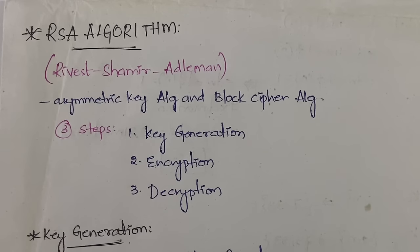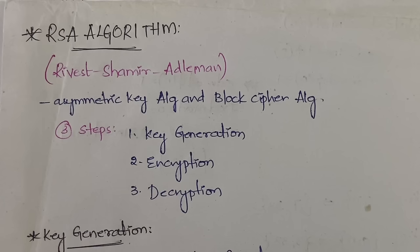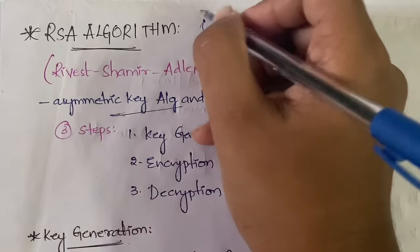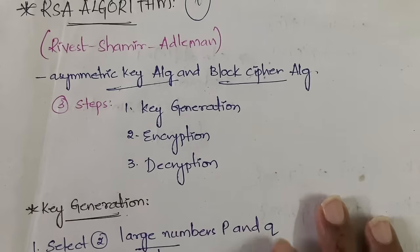Hello everyone, welcome back to my YouTube channel Trouble Free. In today's video I'm going to explain the RSA algorithm, which stands for Rivest, Shamir and Adelman, in the subject of network security. So far we have learned some symmetric key algorithms like DES, Blowfish, and RC4. From now, the algorithms we're going to learn — RSA, ElGamal, Diffie-Hellman, Knapsack — all come under asymmetric key cryptography. RSA is a block cipher algorithm.